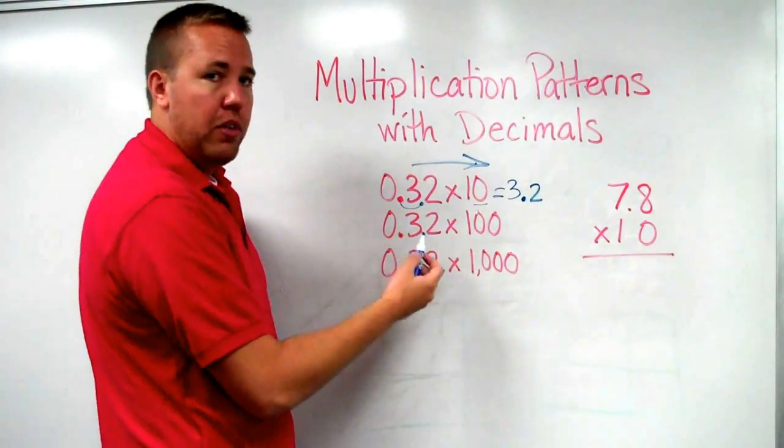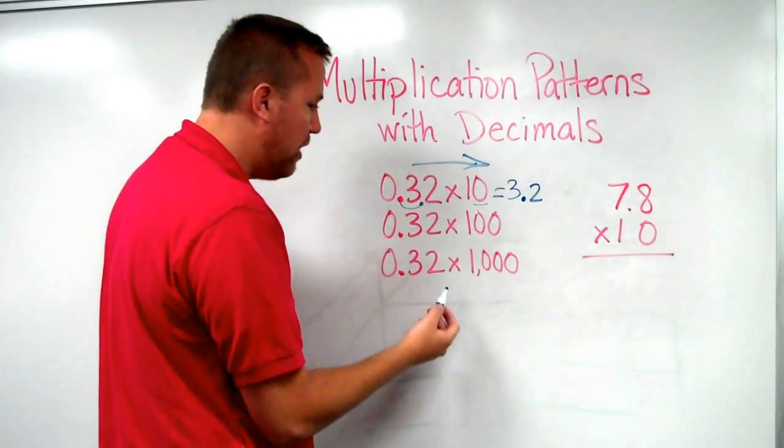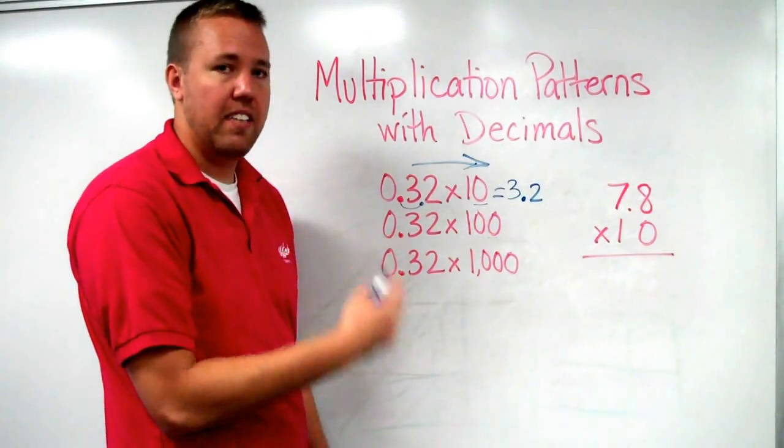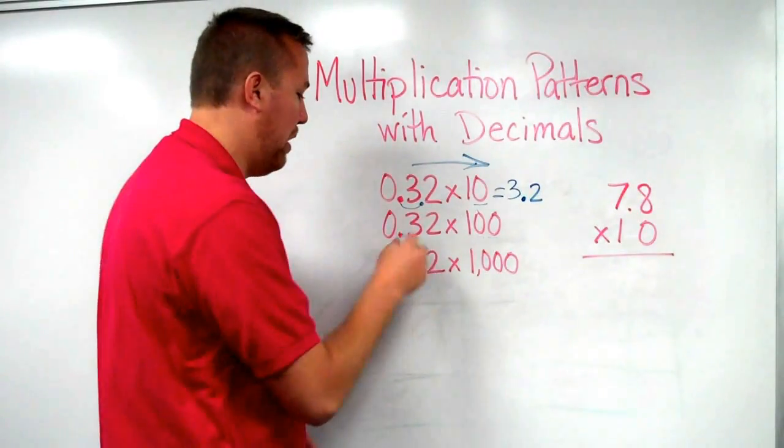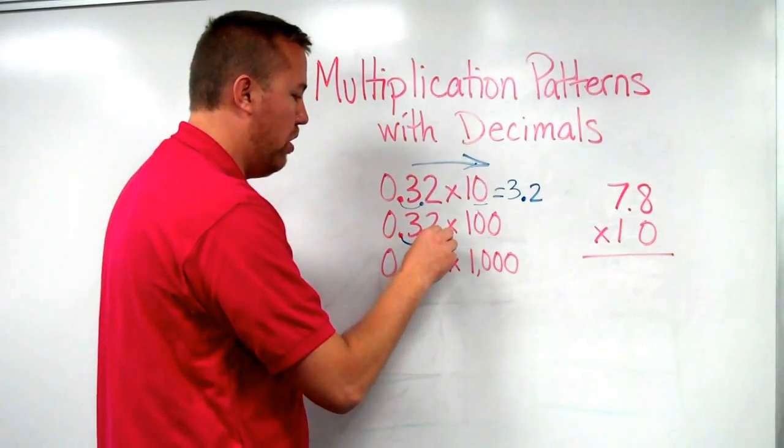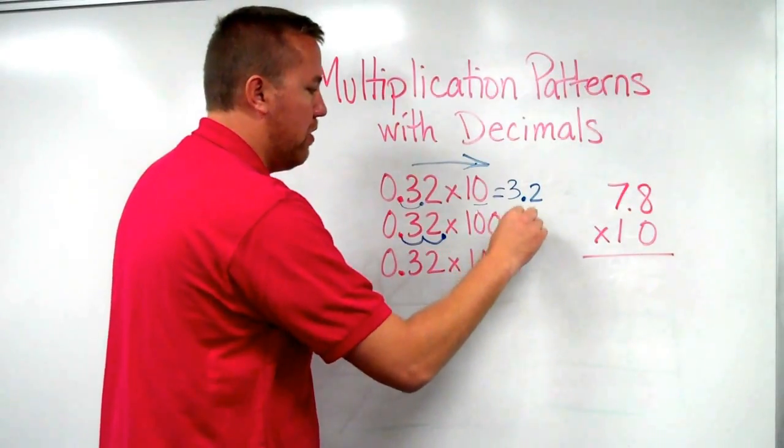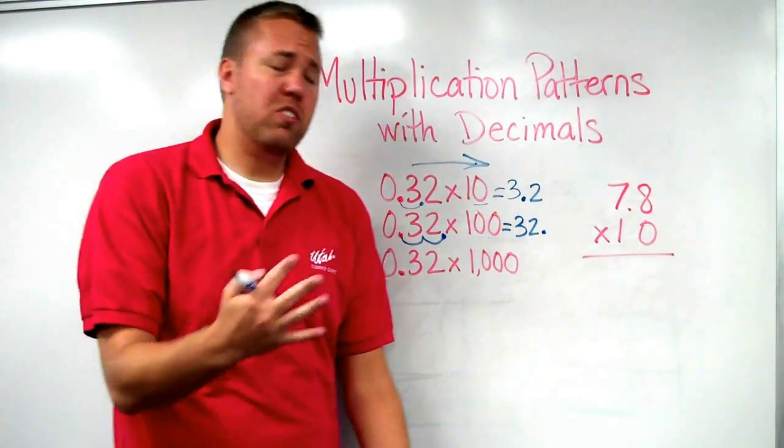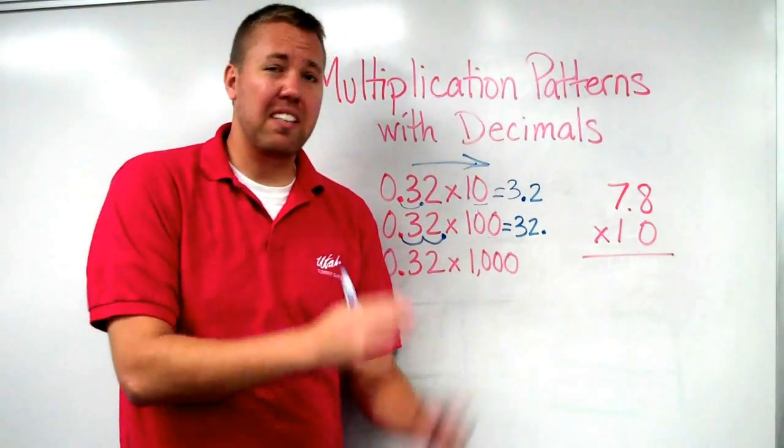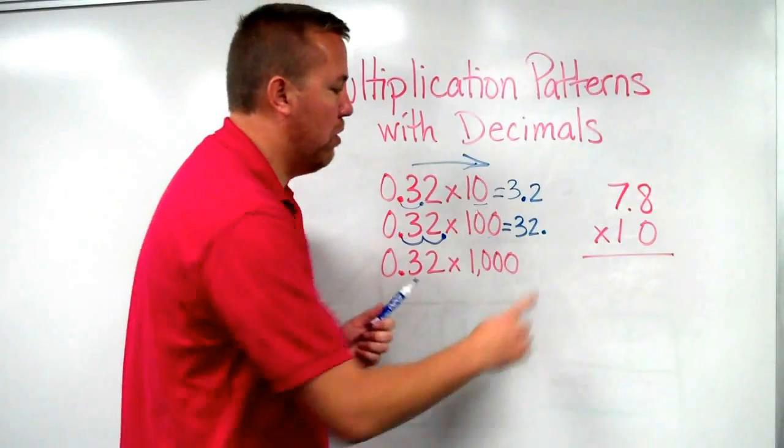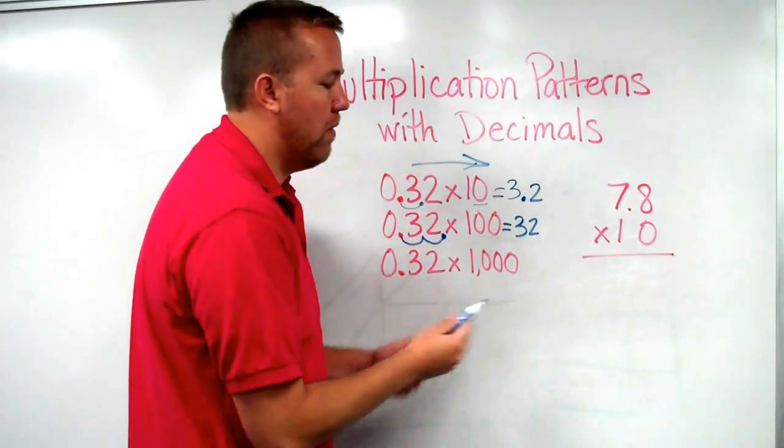So now, if I'm looking at 0.32 times 100, there are two 0s, so I'm going to move that decimal place two spots. So I start right where it's at, 1, 2, and I put it there. So that equals 32 with that decimal. Now that's just a whole number.